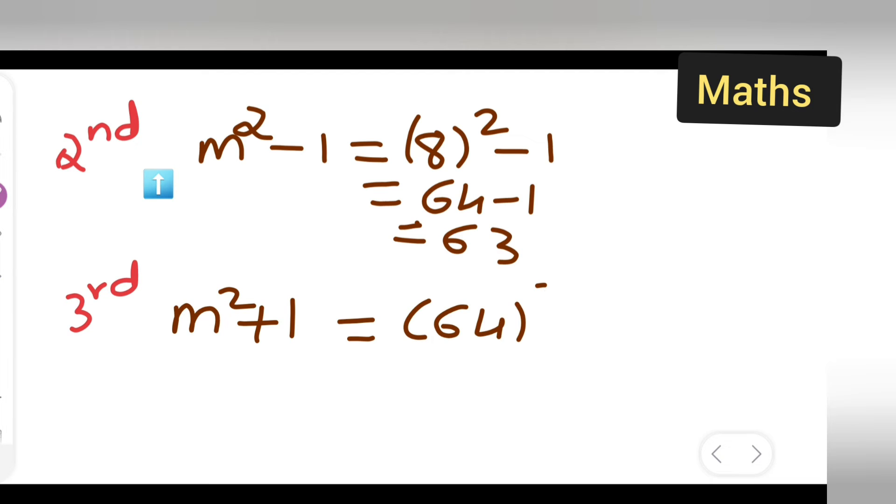64 whole square plus 1. 64, sorry, 8 square it is. Your value of m is 8. 8² plus 1. So 8 square is 64 plus 1. You will get 65.